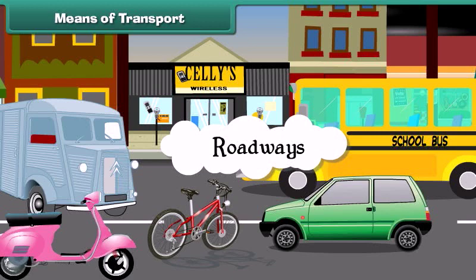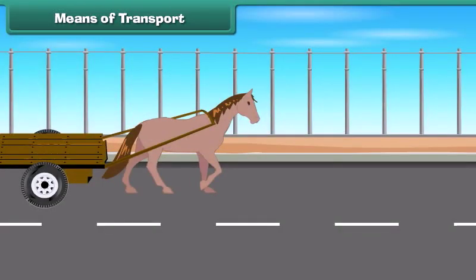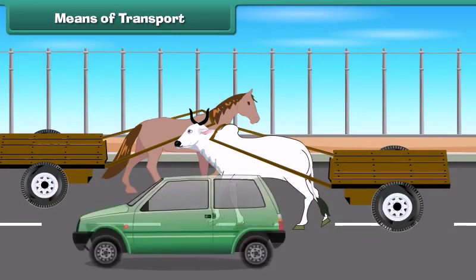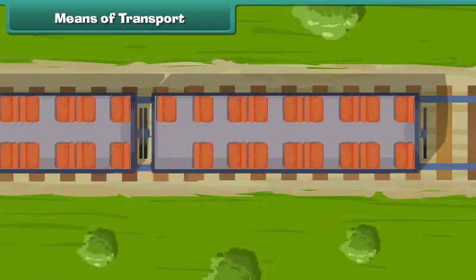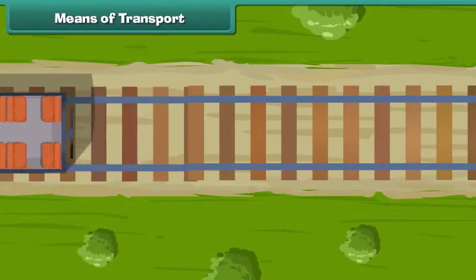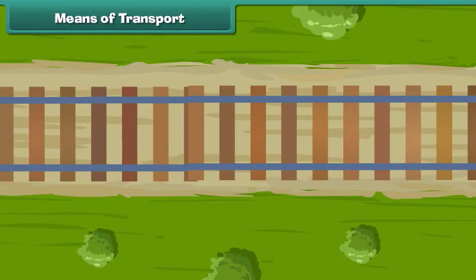What is meant by the term roadways? A roadway is a thoroughfare, route or way between two places which typically has been improved to allow travel by some conveyance, including a horse, a cart or a motorized vehicle. The trains run on special rail tracks called railways. Railways are the road tracks over which trains run with the help of their wheels.